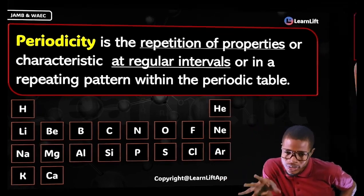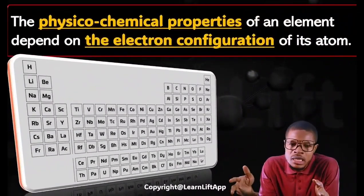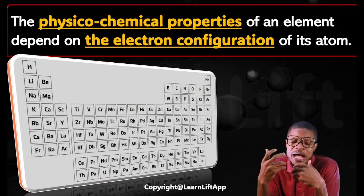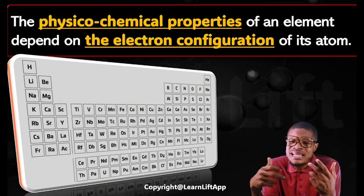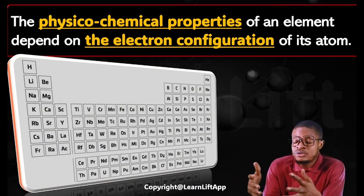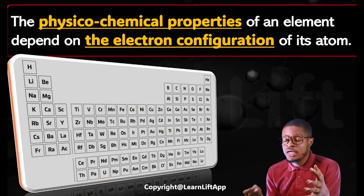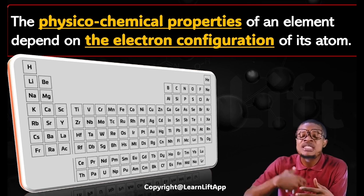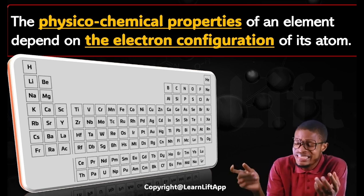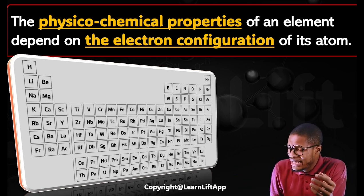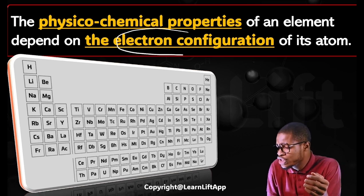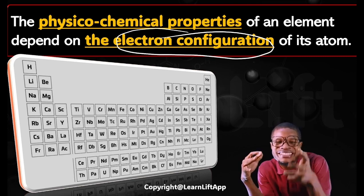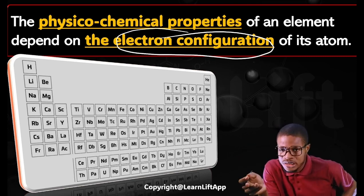One of the key things about periodicity is that it brings about physical and chemical properties. Sometimes you see physical properties repeating themselves; in other instances, you see chemical properties repeating themselves. The physical and chemical properties of elements depend on the electronic configuration of their atoms, and all of these define your periodicity.